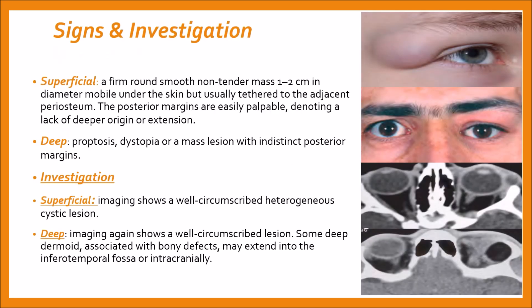In cases of superficial dermoid cysts, signs include a firm, round, smooth, non-tender nodule of 1-2 cm in diameter, mobile under the skin but usually tethered to the adjacent periosteum. The posterior margins are easily palpable, denoting a lack of deeper origin or extension. Deep lesions cause proptosis, dystopia, or a mass lesion with indistinct posterior margins.